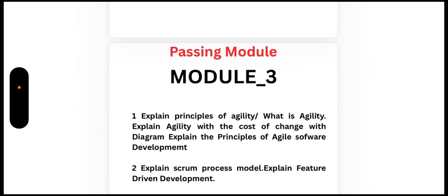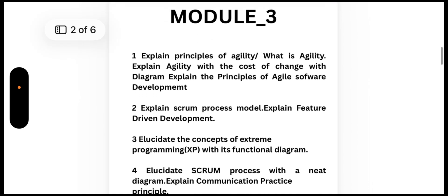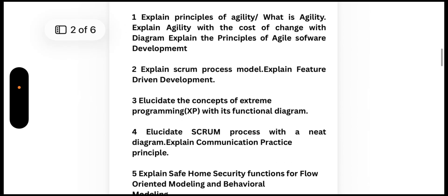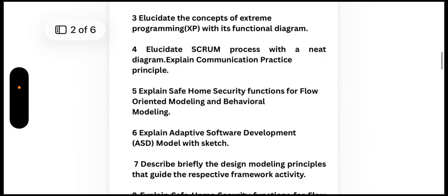Third, explain Feature Driven Development (FDD). Fourth, elucidate the concepts of Extreme Programming with its functional diagram, and elucidate the Scrum process with a neat diagram. Also explain the communication practice principle. Fifth, explain Safe Home security functions for flow-oriented modeling and behavioral modeling. Sixth, explain the Adaptive Software Development model with a sketch.